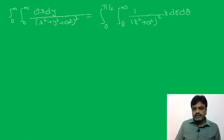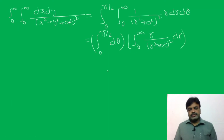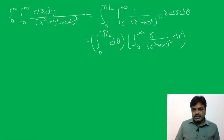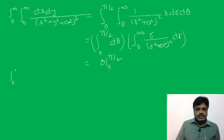Observing that the integrand has only r (no θ), we can integrate separately. This gives: integral from 0 to π/2 of dθ, multiplied by integral from 0 to infinity of r/(r² + a²)² dr. The integral of dθ evaluated from 0 to π/2 gives π/2.